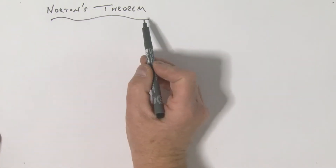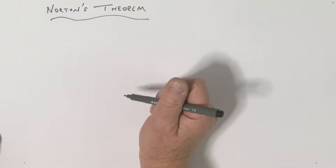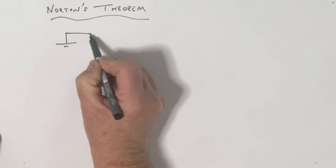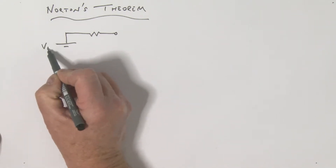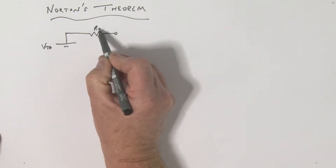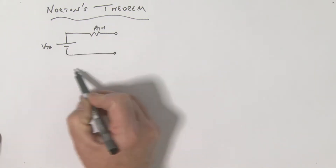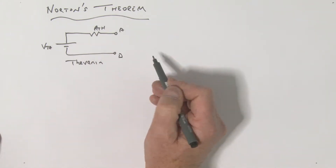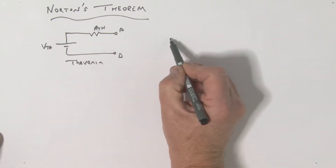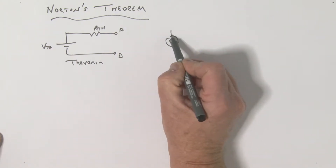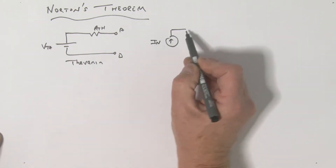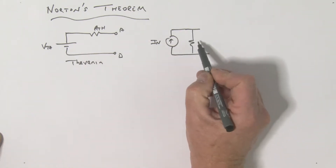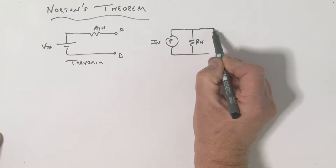What I want to do is talk to you about Norton's theorem. First let's draw a Thevenin equivalent circuit — I've got my source V_Thevenin and my resistance R_Thevenin. Terminals A and B. Now the Norton equivalent circuit has a current generator; the value of the current generator is called I_N for I Norton, and we have a resistor in parallel with that current generator called R_N, R Norton, with terminals A and B.